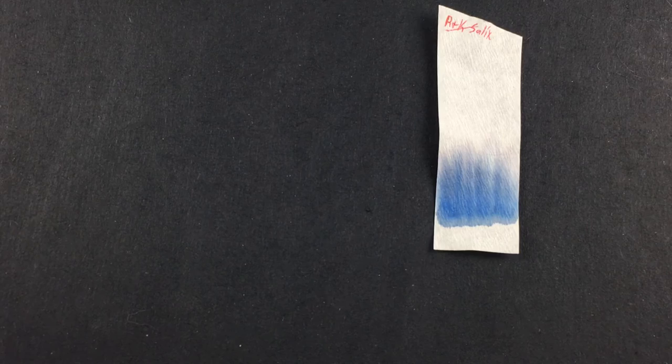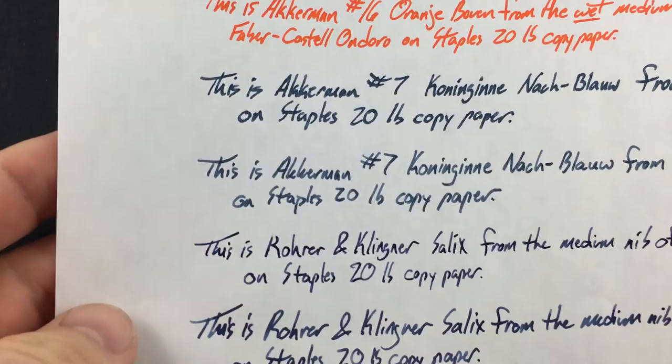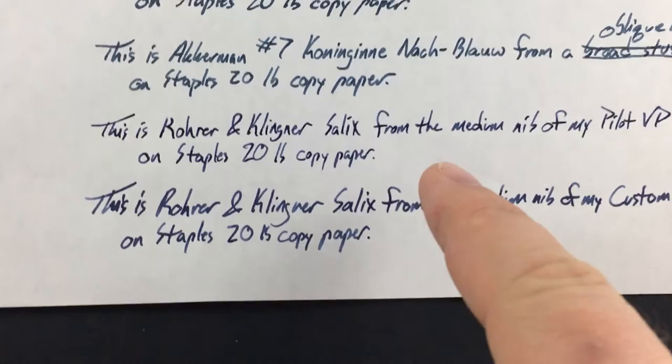Also, it doesn't bleed, feather, or spread. Let's see. Where is the sample? It is here-ish. So this is the one I did with the vanishing point right here. You can see no bleed, feathering, or spreading. Let's go ahead and zoom in right quick. There you go.